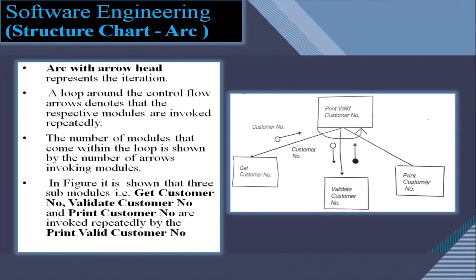Another symbol is the arc with an arrowhead, which represents iteration. A loop around the control flow arrows denotes that the respective modules are invoked repeatedly. The number of modules that come within the loop is shown by the number of arrows invoking those modules.